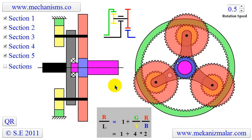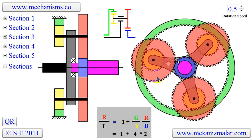In this animation, we present a planetary gear system made up of eight gears and one carrier arm.